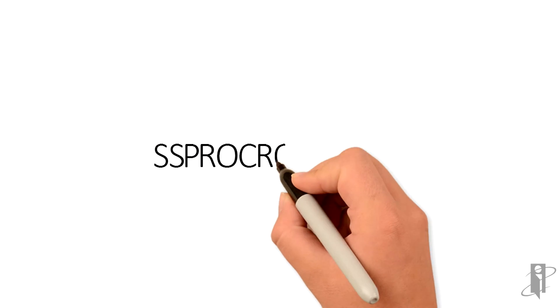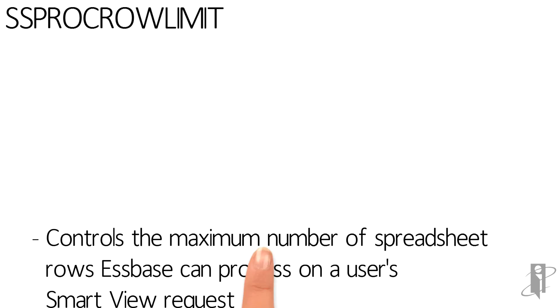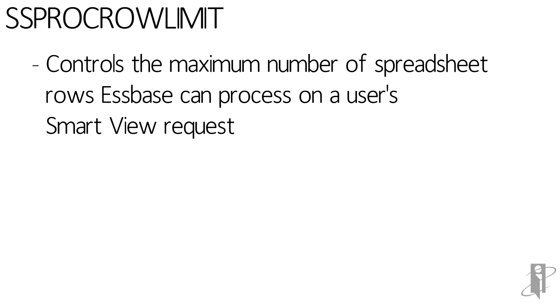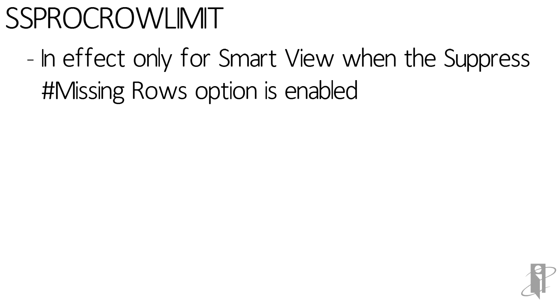What is the spreadsheet process row limit? In short, this setting controls the maximum number of spreadsheet rows S-Space will process from a user's Excel SmartView requests. The spreadsheet process row limit is only for Excel when the SmartView option 'suppress pound missing rows' is turned on.